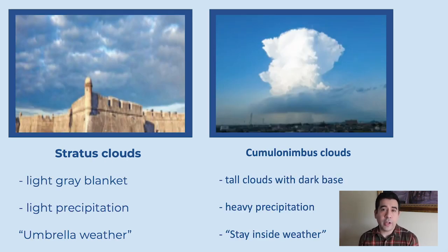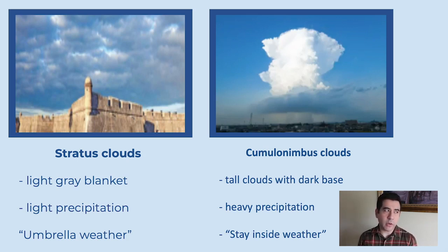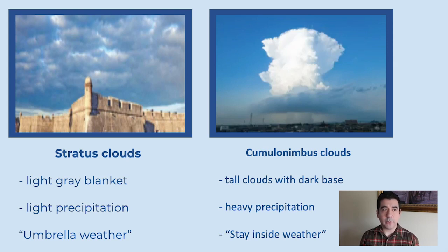A third kind of cloud is stratus clouds. That's when you look up in the sky and it looks like there's a gray blanket up in the sky. When there's stratus clouds, there's usually going to be light precipitation — so light snow or light rain. I like to call that umbrella weather. With my dog Leo, if there's stratus clouds, he would go outside as long as I have an umbrella over us.